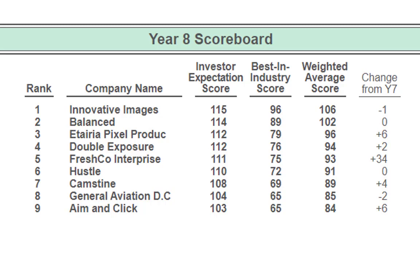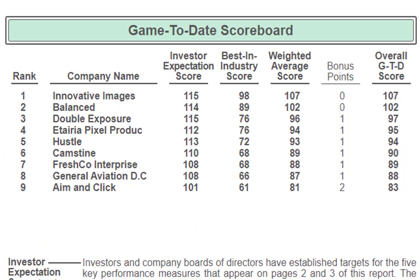I absolutely have to commend company F for that huge leap — they were one of the teams I was deeply concerned about. Company A in 9th place also gained plus 6 in year 6, so they're moving in the right direction. Company I is leading the charge and company B has been pretty much steady at the top the whole time. Let's see if anyone can knock them off. On the game-to-date scoreboard, company I is at rank 1 with company B at rank 2. Company I has a comfortable lead, but if they make one misstep, company B will knock them off. No one is running away with it — even company A at 83 still has plenty of time to catch up.